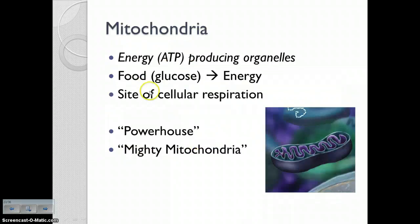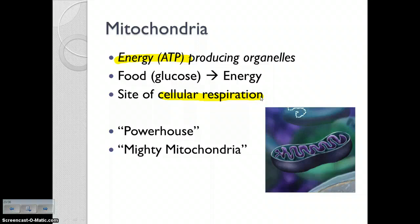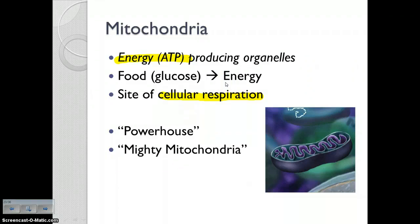The mitochondria is the powerhouse of the cell because they produce energy during the process of cellular respiration. Cellular respiration is basically the opposite of photosynthesis — we break down food and use it to get energy. Remember, photosynthesis was using energy to make food. Cell respiration in the mitochondria is taking food and breaking it down to get energy.